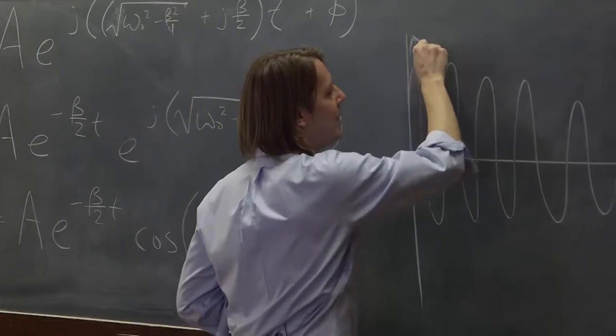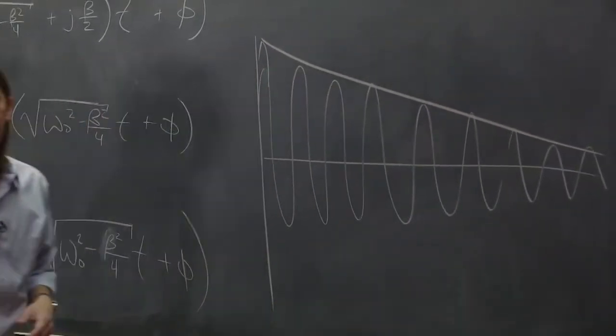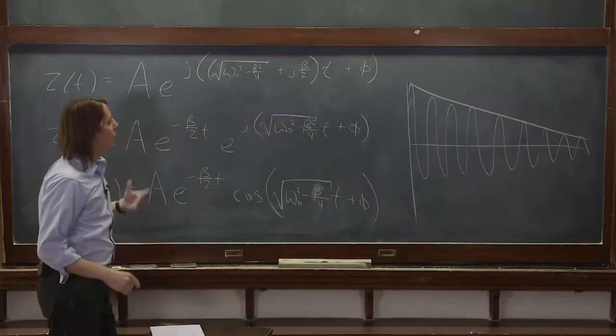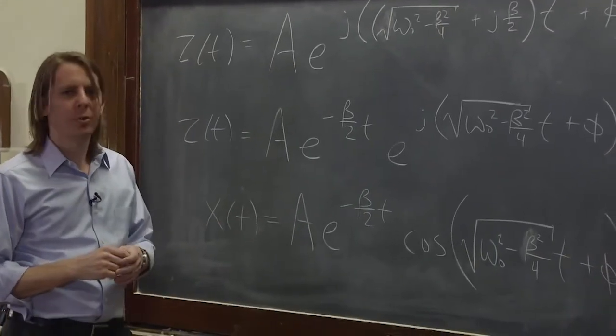So if we were to plot the amplitude versus time, it would come down exponentially. So this is what real damped oscillators do, and now we'll look at one.